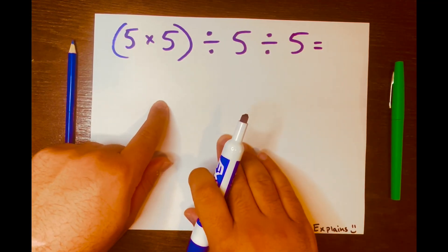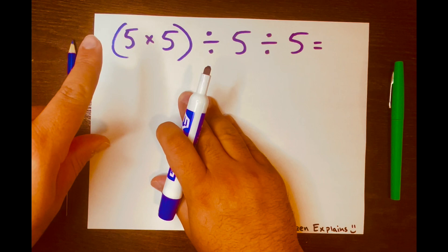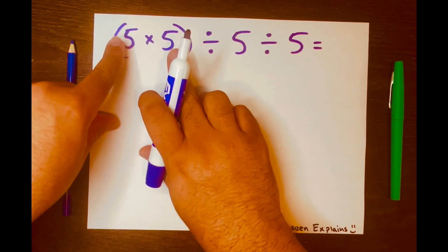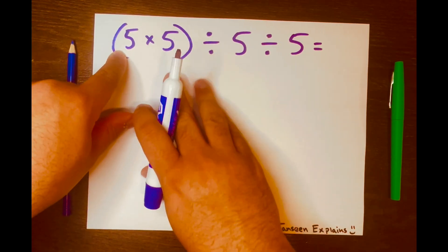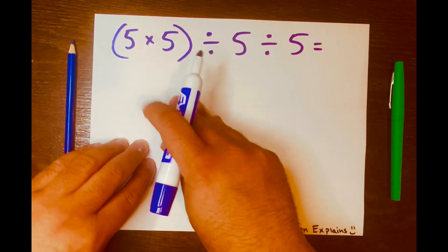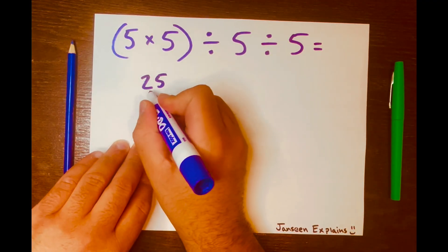So according to PEMDAS, you work within the brackets or the parentheses, or in other words you start with the parentheses first. So 5 times 5 is 25 and I'll write this as a fraction, so 25 over 1 to make the math easy.